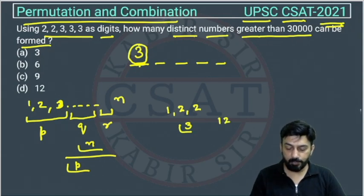But what will happen? The number is suppose 1, 2, 2. Then we are changing these numbers. Then again, this will remain same because these are of same type.